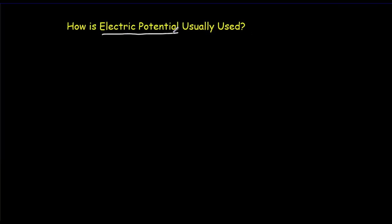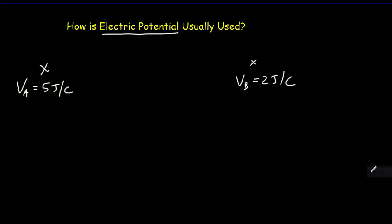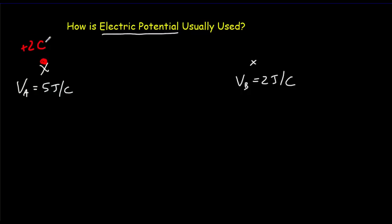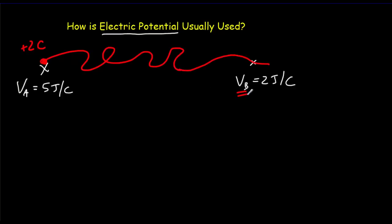How do we use the idea of electric potential in calculations? Suppose you've got a configuration of charges creating an electrical potential of 5 joules per coulomb at point A, and another point B with a potential of only 2 joules per coulomb. You bring a 2-coulomb test charge. It's in an electric field, so there's a force on it and it accelerates, moving in some path and passing through point B. We can now calculate the electrical potential energy at each point.